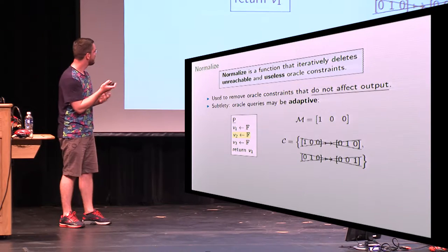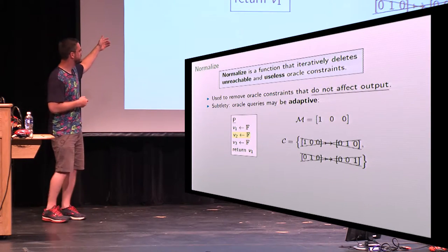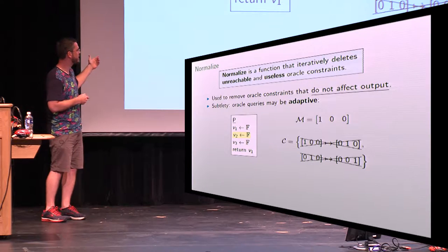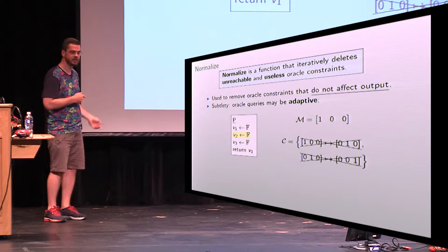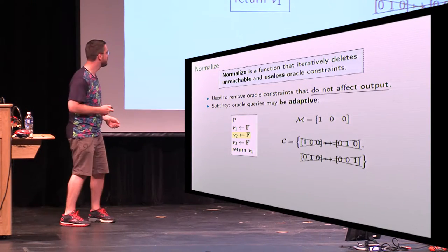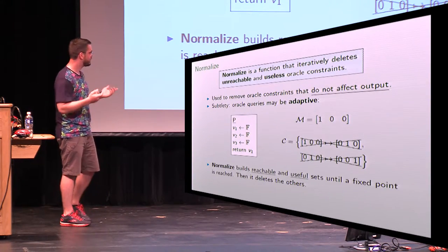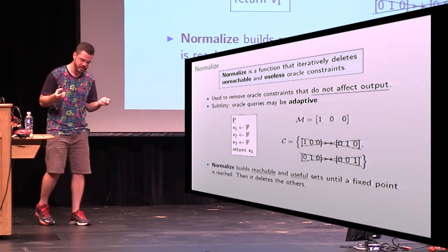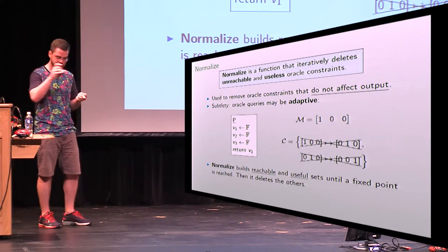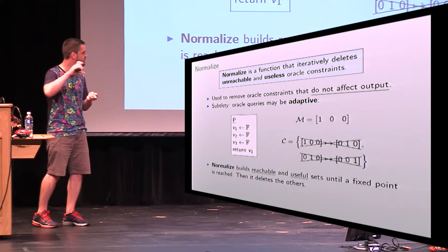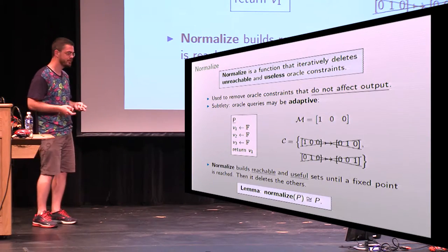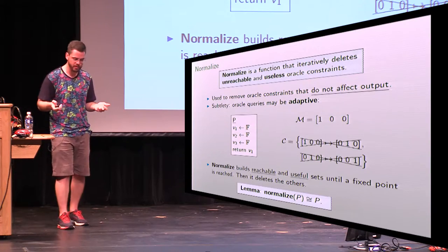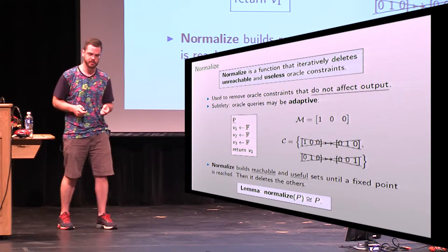This intuitively makes sense because you only return V1 — these intermediate queries could do anything and the adversary wouldn't know. So normalize builds these reachable and useful sets, and then deletes everything else that isn't reachable or useful. We show that this normalized version of the program is indistinguishable from the program itself.